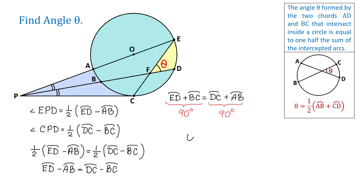To find angle theta, we just need to take one-half of 90 degrees. Then, angle theta equals 45 degrees. I hope you enjoyed this problem and thank you for watching.